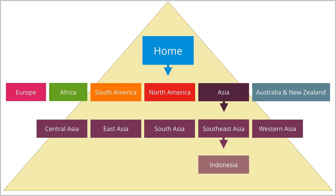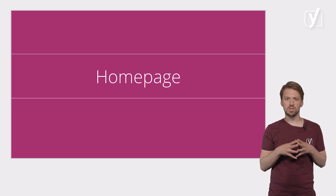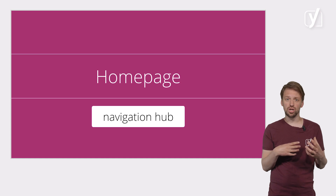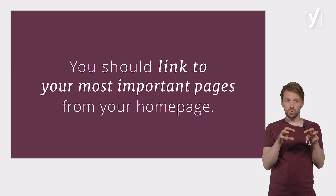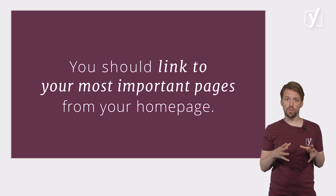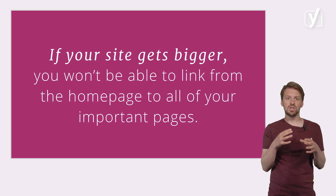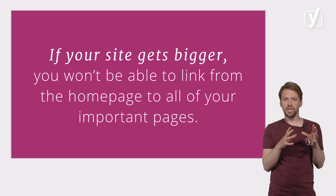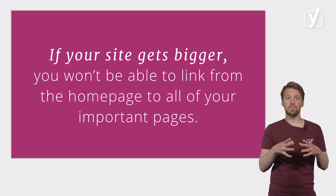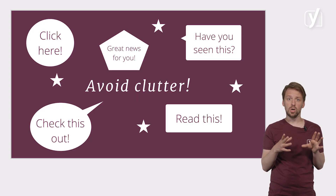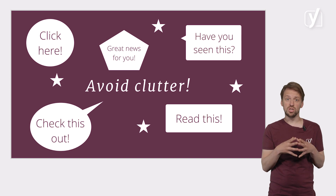We'll revisit the topic of categories in the next video. But first, let's explore the most important part of organizing your site: the homepage. It goes without saying that your homepage should act as a navigation hub for your visitors. You should link to your most important pages from your homepage, and your visitors are more likely to end up on the pages you want them to end up on. As an added bonus, you show Google that these pages are important as well. Of course, if your site gets bigger, you won't be able to link from the homepage to all of your important pages. At Yoast, we write about 6 new articles a week and have about 16 important main articles. We cannot link to all of them from the homepage — that will lead to clutter, which makes it less likely that your visitors notice the pages you want them to visit.